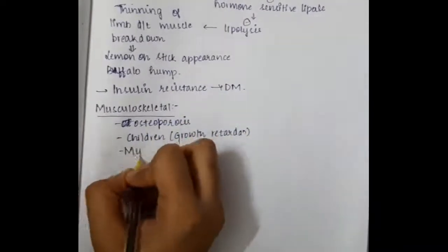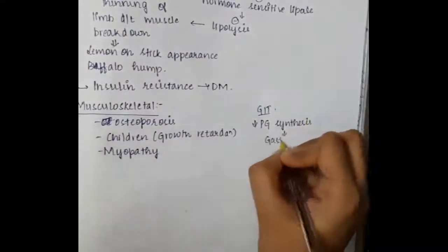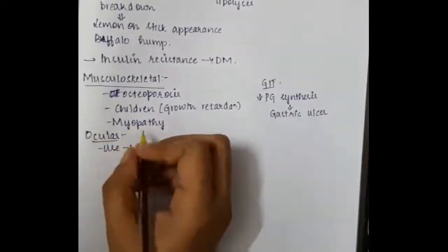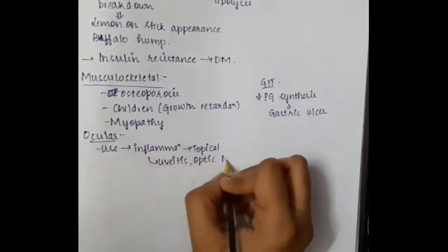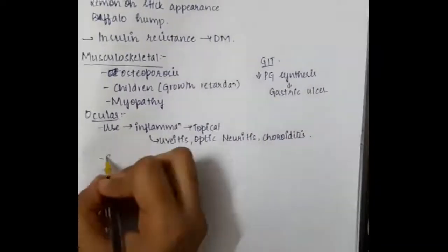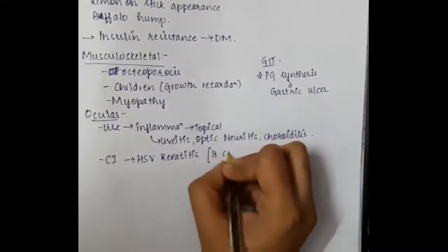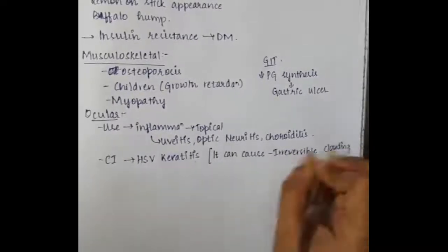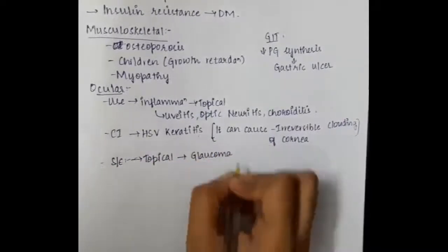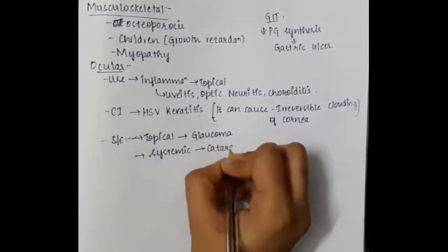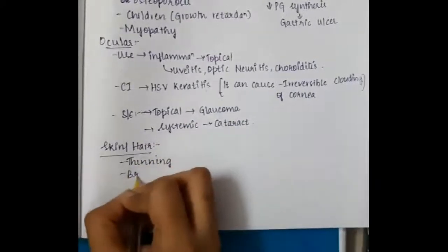In musculoskeletal disorders, patients develop osteoporosis; in children, growth retardation and myopathy are seen. In the GIT, decreased prostaglandin synthesis causes gastric ulcer. In the eye, steroids are used for uveitis, optic neuritis, and choroiditis, but are contraindicated in herpes simplex virus keratitis as they cause irreversible corneal clouding. Topical steroids cause glaucoma; systemic steroids cause cataract.